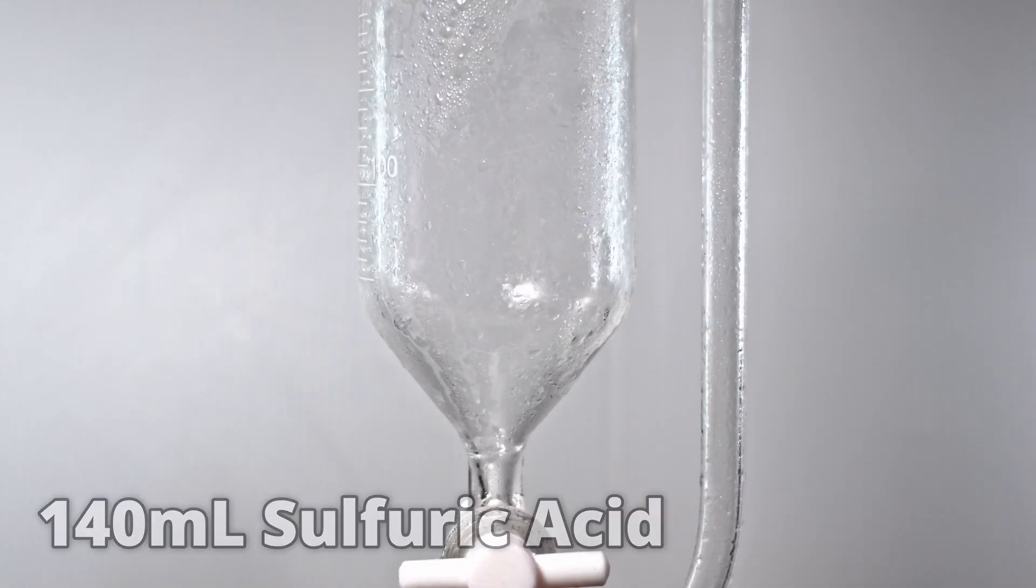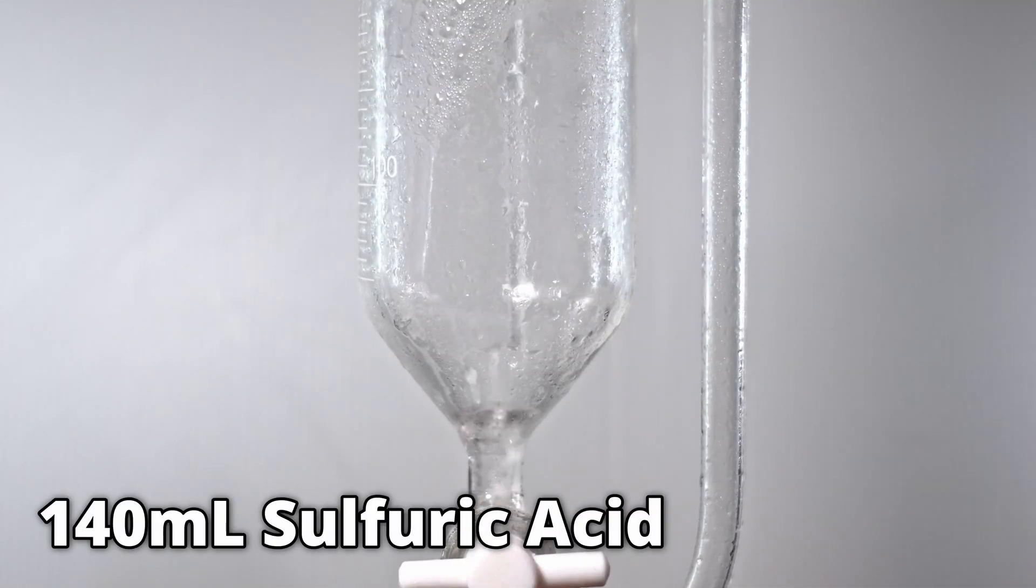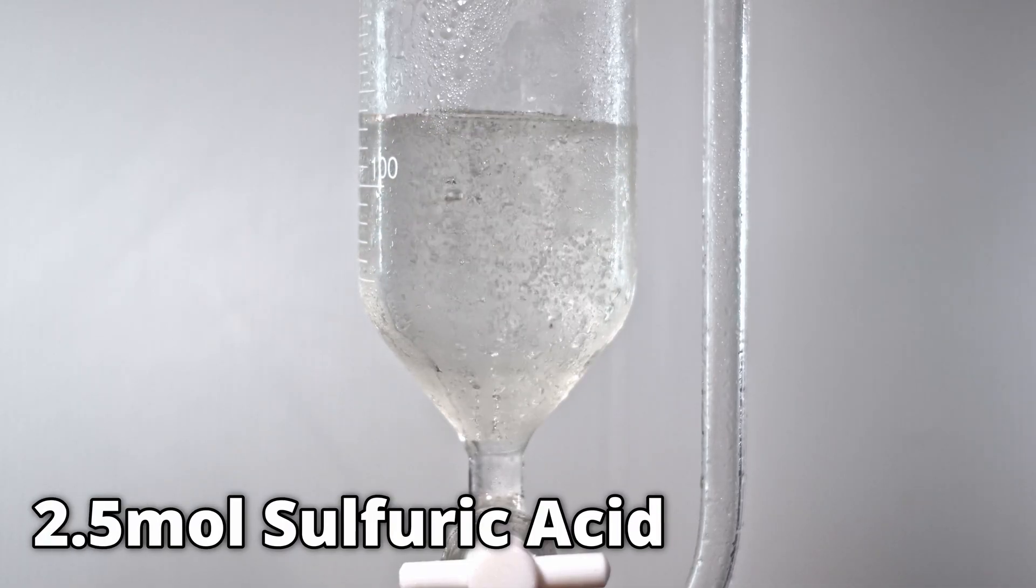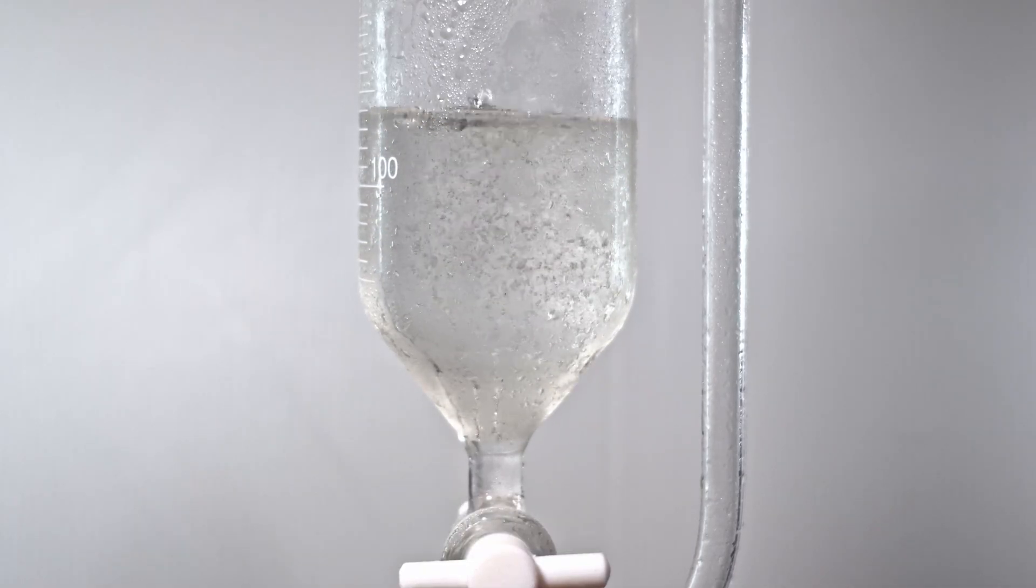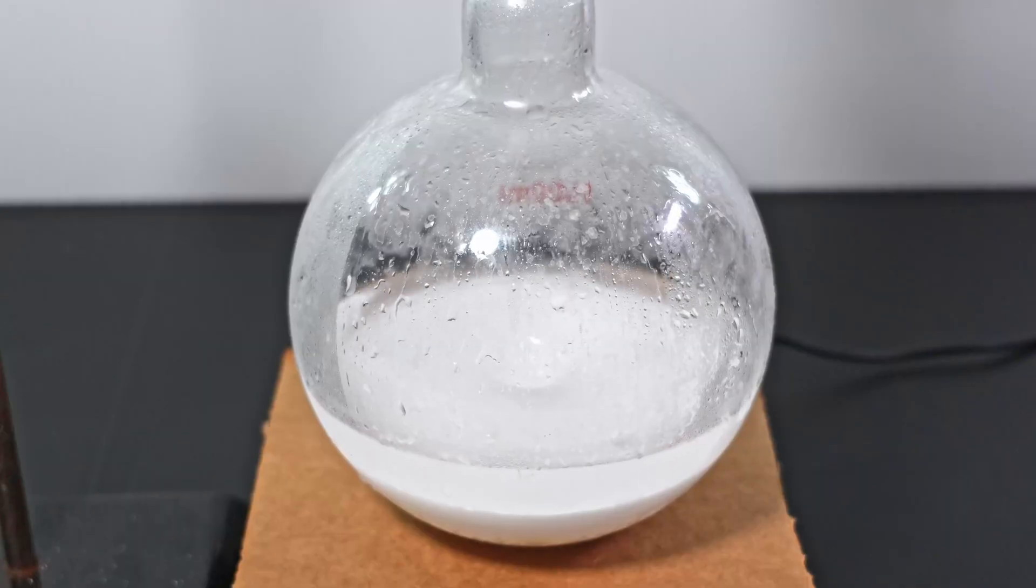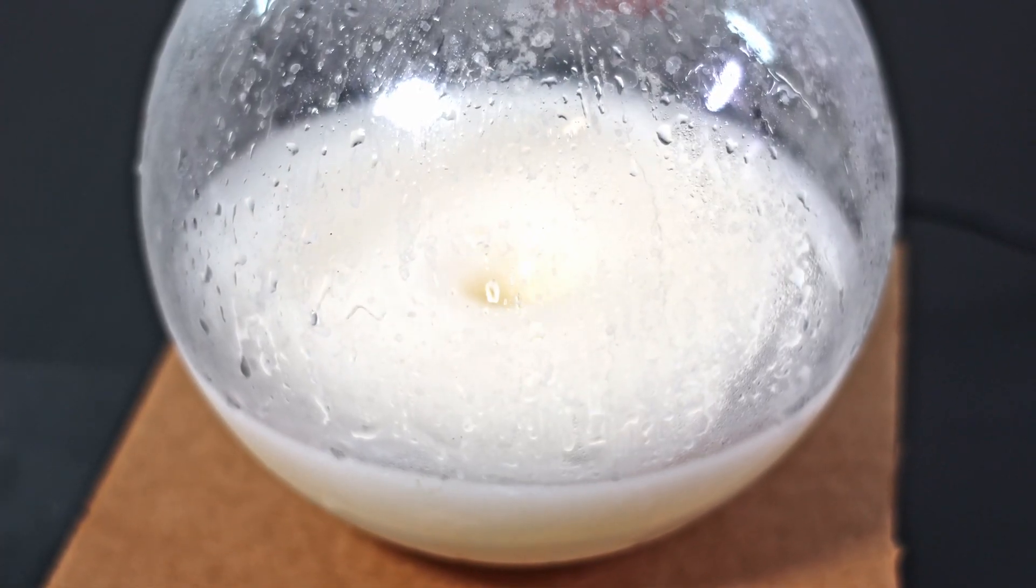In the addition funnel, I pour in 140 milliliters of 94% sulfuric acid. This is approximately 2.5 moles of sulfuric acid. In hindsight though, I probably should have used a 70 to 80% concentration. I slowly drip it in while stirring on high. This minimizes localized superheating and bromide oxidation.